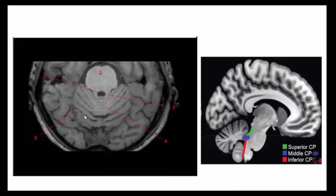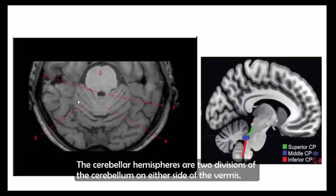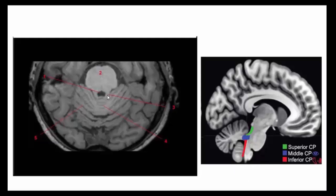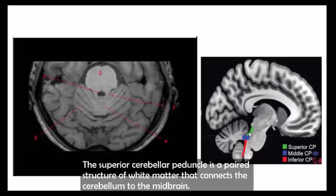The cerebellar hemispheres are two divisions of the cerebellum on either side of the vermis. This is the superior cerebellar peduncle on sagittal view. The superior cerebellar peduncles are paired structures of white matter that connect the cerebellum to the midbrain.